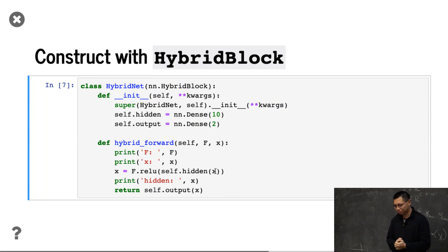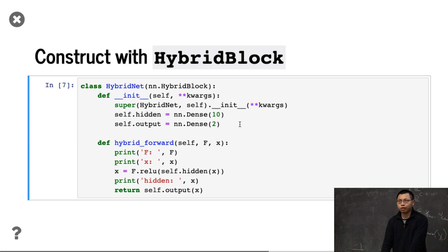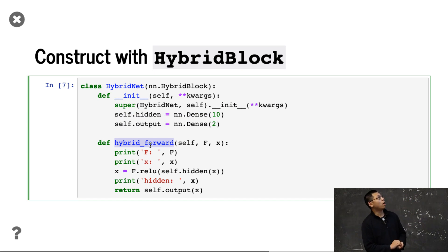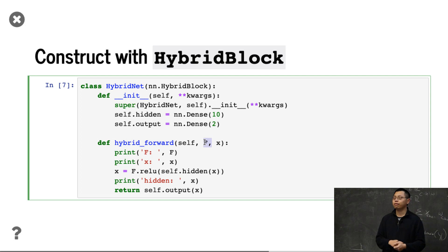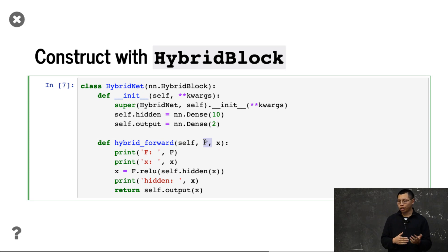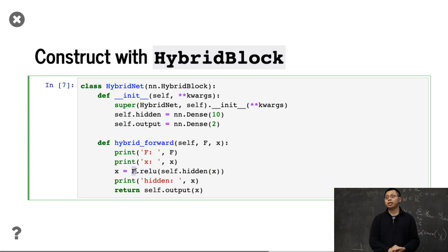Let me go through how hybridize works. We use nn.HybridBlock here. We define two dense layers. The key difference is we don't define a forward function — we define a hybrid_forward function. One change here: we add an F parameter. F is the functional namespace. In the imperative model, F is just the mxnet.ndarray namespace. In the symbolic model, F is the symbol module. We're going to print what F is and what the input X is. We feed X to the hidden layer with ReLU from function space F, print the hidden layer output, put it into the output layer, and return the results.